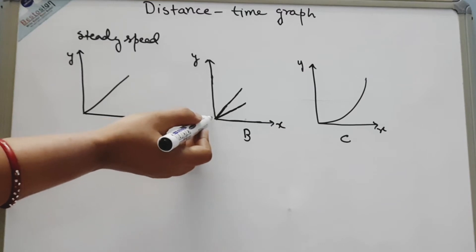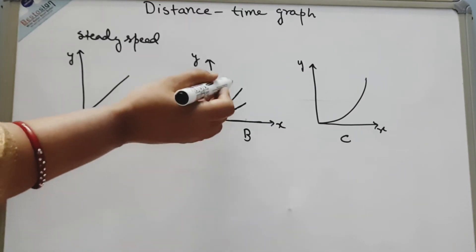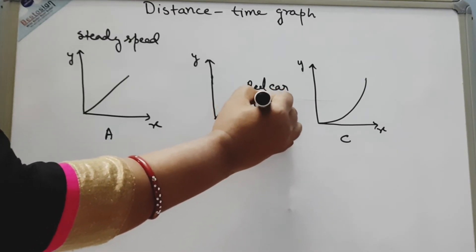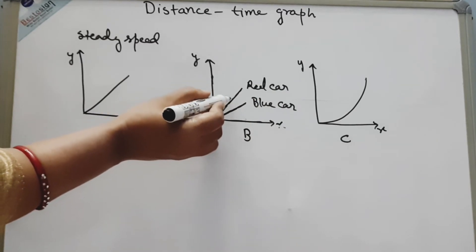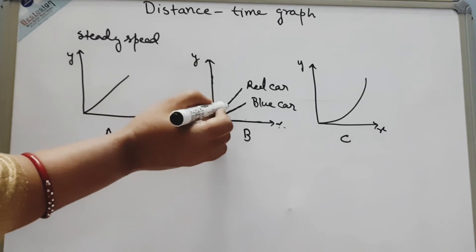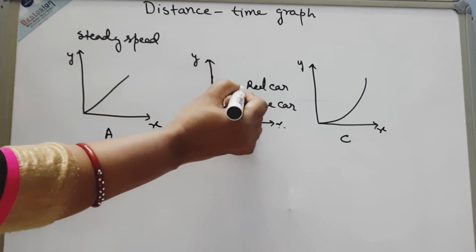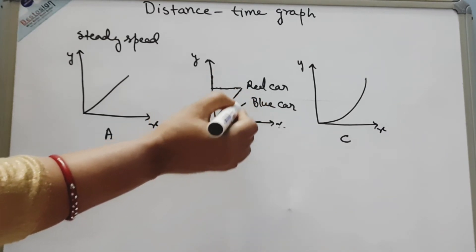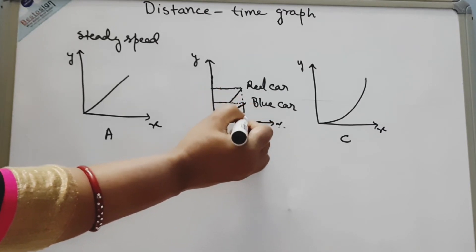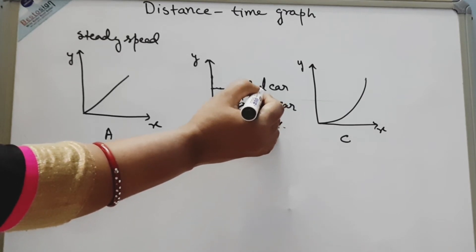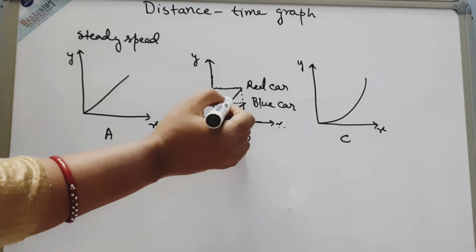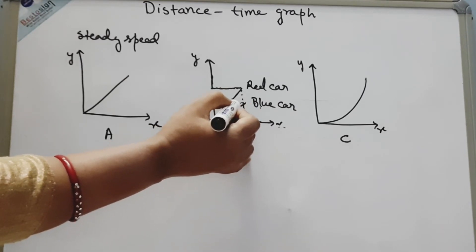This is another type of distance-time graph where we compare the speed of two objects. Suppose this is the graph for the red car and this is the graph for the blue car. The speed of the red car is greater than the blue car. The red car has covered more distance in the same time, whereas the blue car has covered less distance in the same time. So this type of graph, where there are two or more lines, is used to compare speeds.